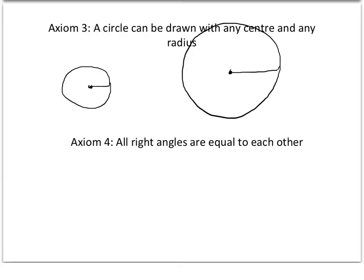Axiom four is all right angles are equal to each other. So if I drew a right angle here and then another right angle here, they are of course equal because they're both 90 degrees.